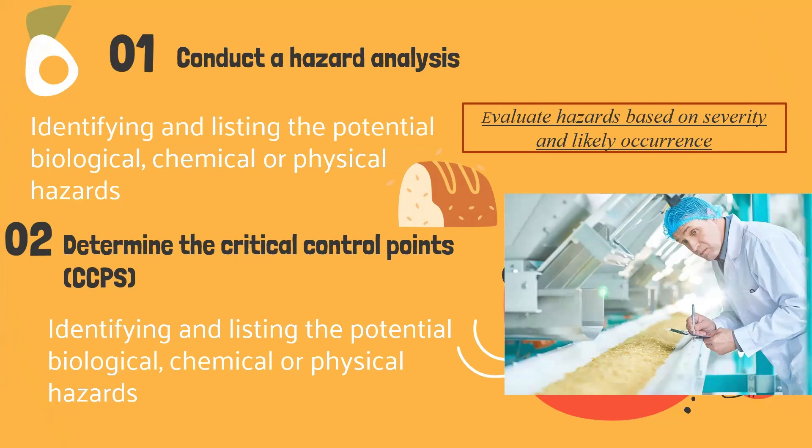Principle number two: determine the Critical Control Points, or CCPs. A hazard is the potential cause of harm to the consumer. A Critical Control Point, or CCP, is an operation or step at which a preventive or control measure can be exercised to eliminate, prevent, or minimize a hazard that has occurred prior to this point.